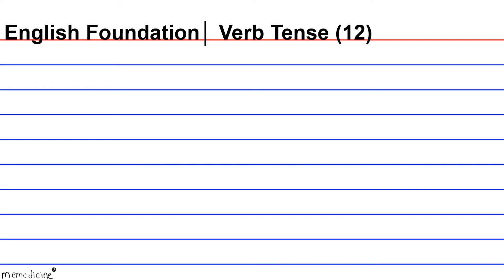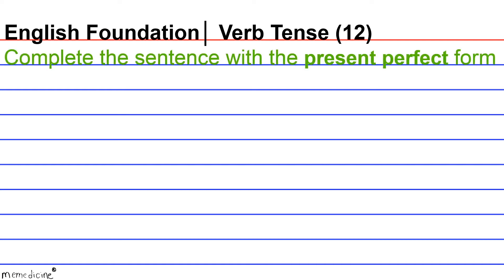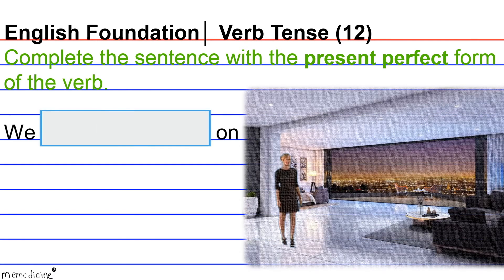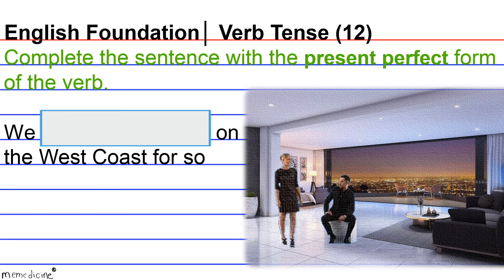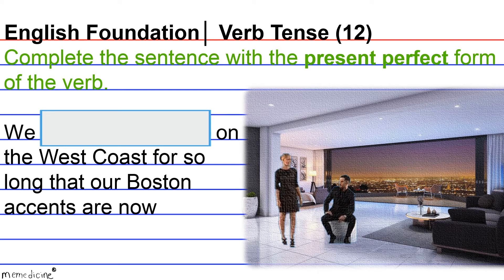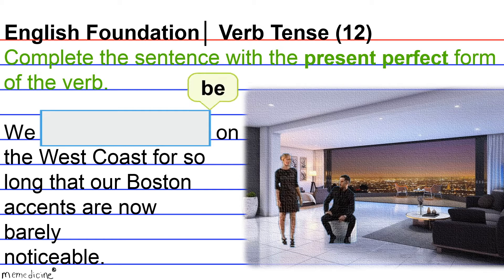English Foundation, verb tense, question 12. Complete the sentence with the present perfect form of the verb: 'We blank on the West Coast for so long that our Boston accents are now barely noticeable.' The task here is to shift the tense of 'be' to its present perfect verb form.